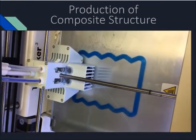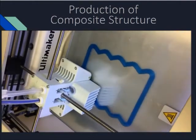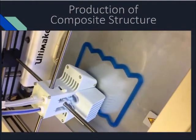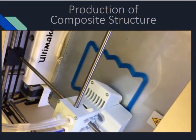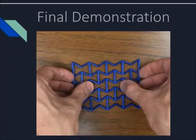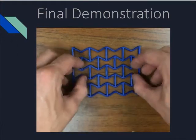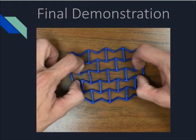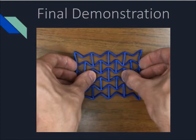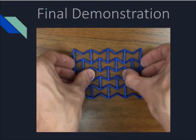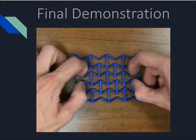As with our hourglass structure, the composite structure was constructed with a 3D printer and NinjaFlex material. Now with our full structure printed, we can demonstrate the full structure in tension and compression. Similar to our singular hourglass, the composite structure exhibits the typical negative Poisson's ratio characteristics of an auxetic material.